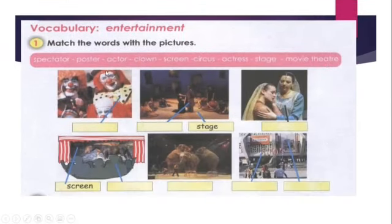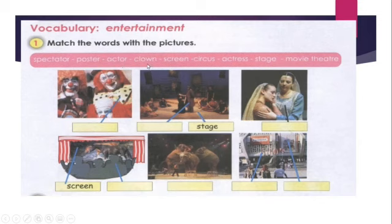Now let's start with the first section: vocabulary entertainment — match the words with the pictures. The focus here is on some words related to entertainment. We have: spectator, poster, actor, clown, screen, circus, actress, stage, and movie theatre. As you can see, we have different pictures and we need to put these words in their places.